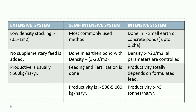The semi-intensive system is the most commonly used method. It is done in earthen ponds with a stocking density of 3 to 20 per meter square. Productivity ranges from 500 to 5000 kg per hectare per year.